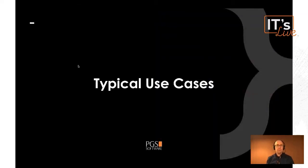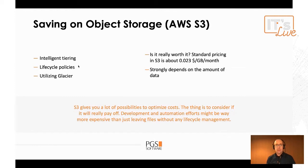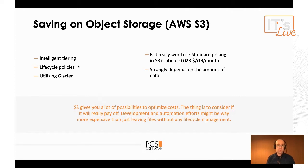Let's speak about some typical use cases to consider. Take AWS S3 — you can save money on object storage by introducing intelligent tiering, using lifecycle policies to move objects from tier to tier, and utilizing Glacier, which is a very inexpensive solution. But you have to ask yourself how much you actually store in S3. How many objects? Is it at the terabyte level? Is it at the petabyte level?